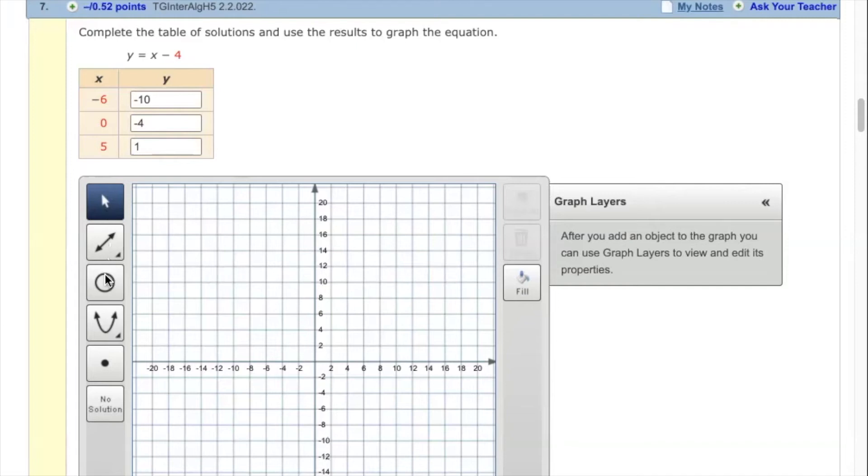We've got various objects on the left. So this is our line, and we also have options for rays. This is a circle. This is a parabola. These are just points. I believe you can plot points also with this button as well, but today we want to use the line graph.